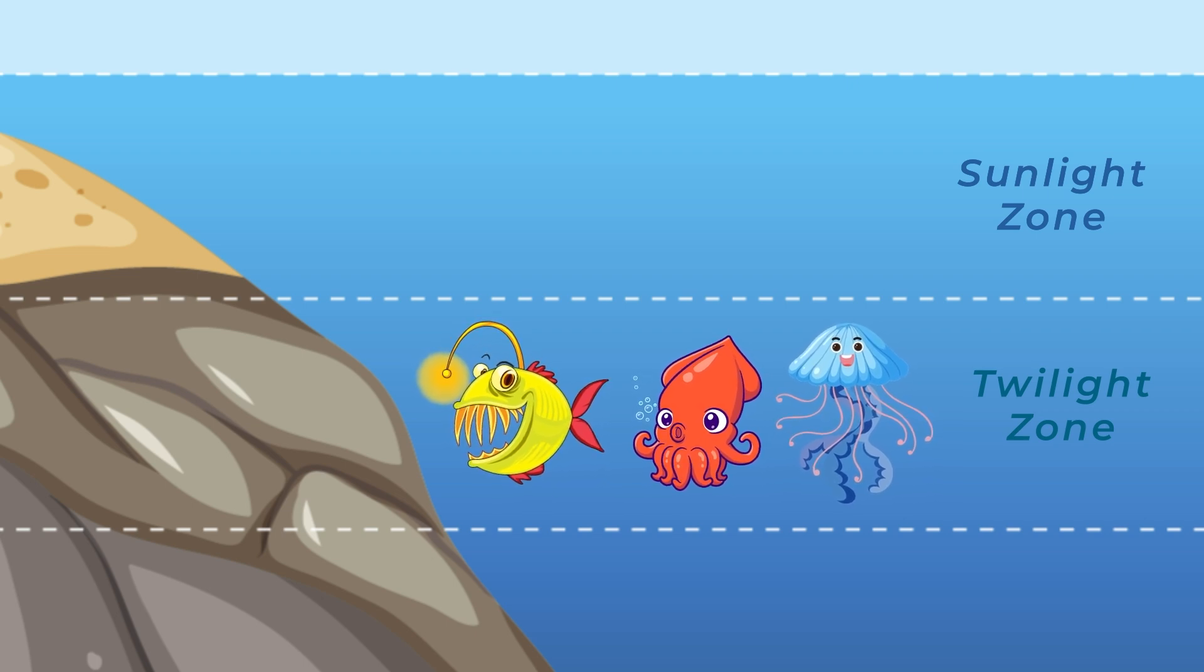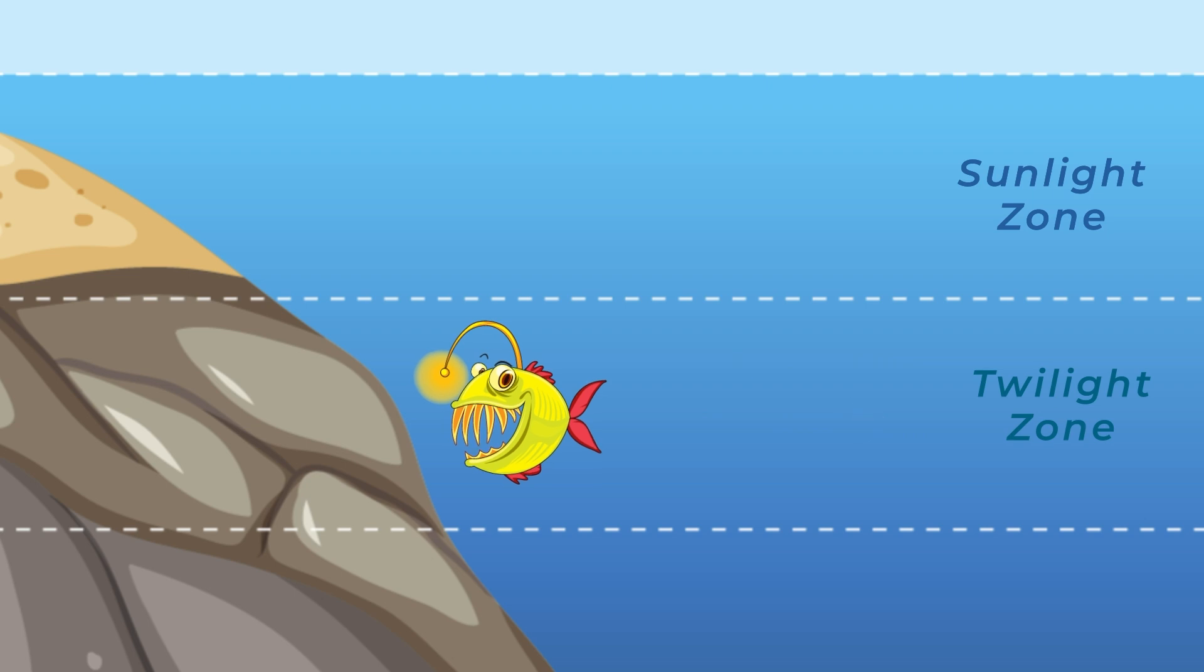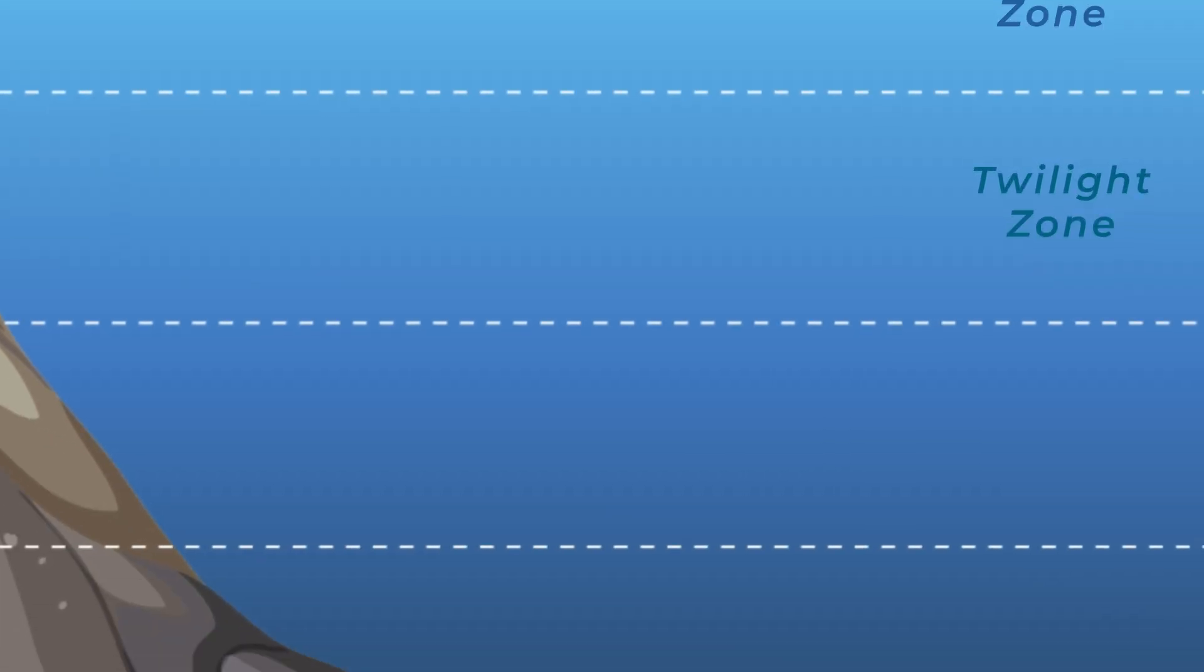But if we dive even deeper, we reach the midnight zone. This is where things get really dark. No sunlight at all. It's as black as night and it's cold too. This zone starts at 1000 meters and goes all the way down to 4000 meters. Can you believe it? That's deeper than most mountains are tall. Only special creatures can survive here.